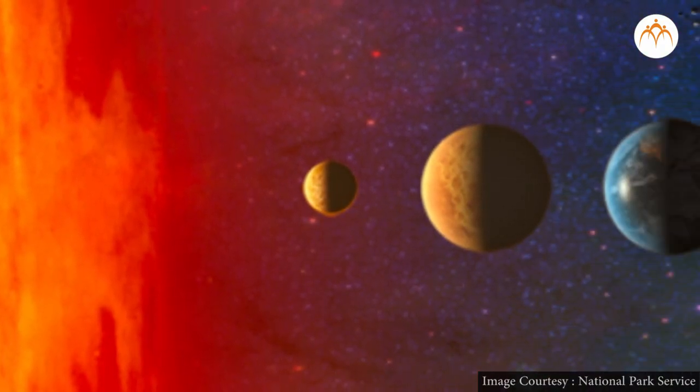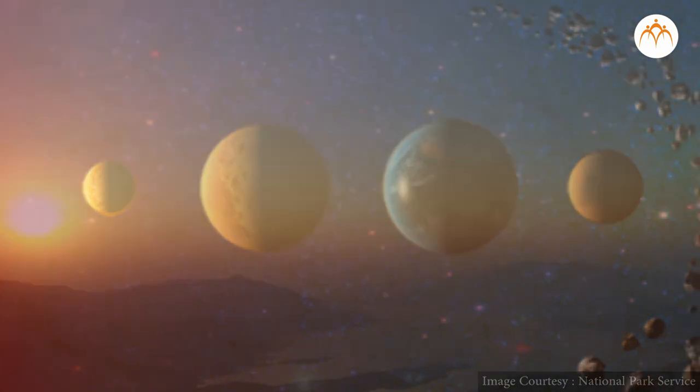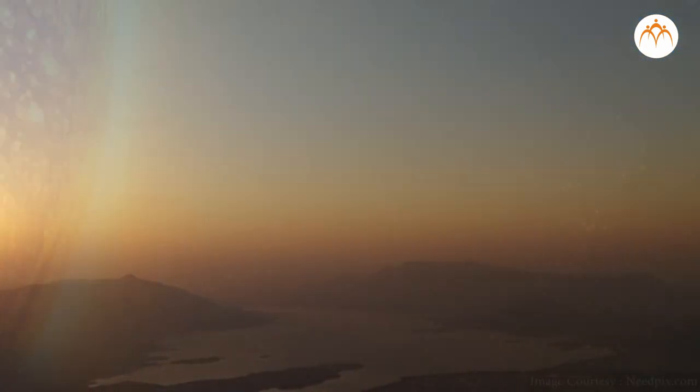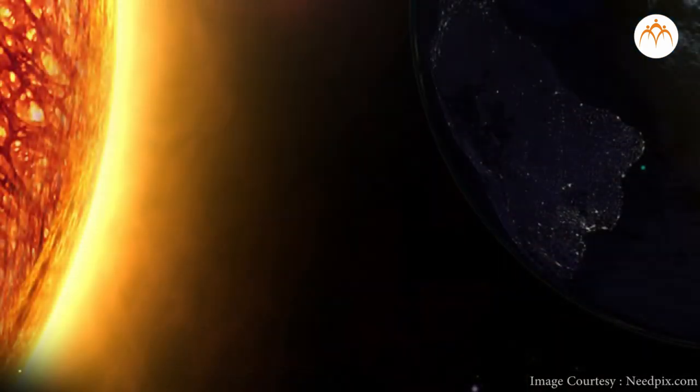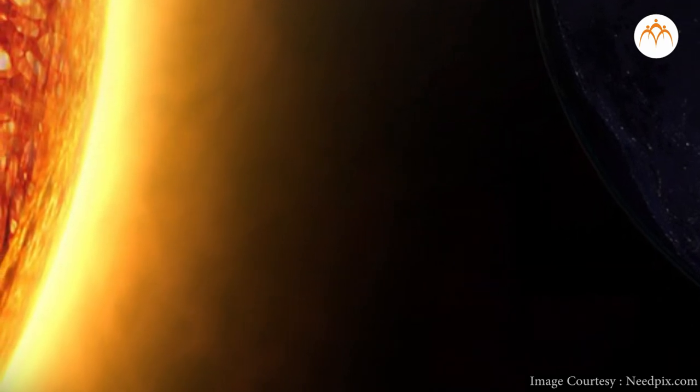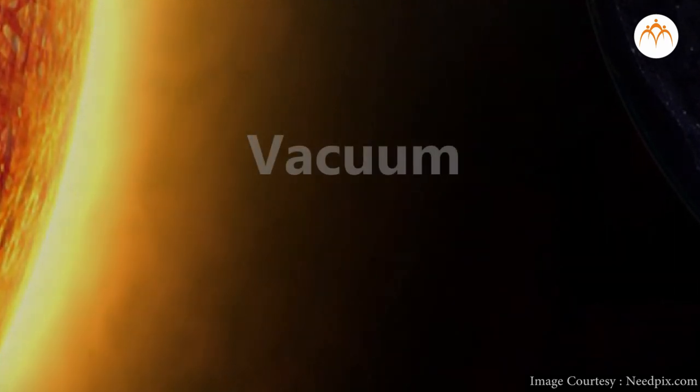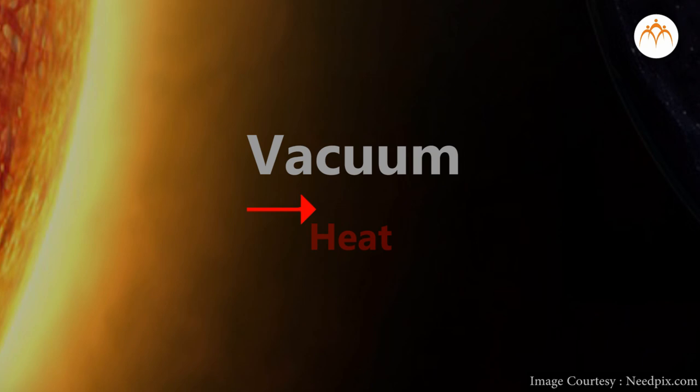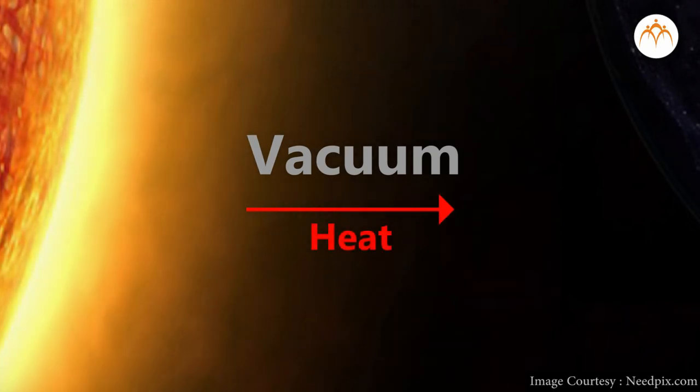Sun is millions of miles away, still we get heat from the sun. In between the sun and the earth, there is no atmosphere for most of the part. This is called vacuum. Heat travels through vacuum before it reaches us. This type of energy transfer is known as radiation.